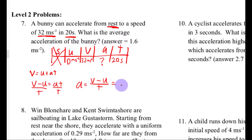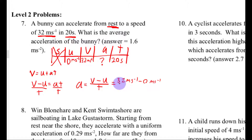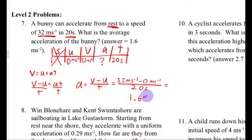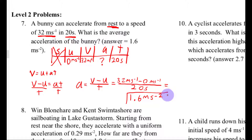Plugging in: v is 32 meters per second, u is 0 meters per second, divided by the time of 20 seconds, gives an acceleration of 1.6 meters per second squared. Notice the units are meters per second divided by seconds, which cancels correctly into meters per second squared. So that's my answer.